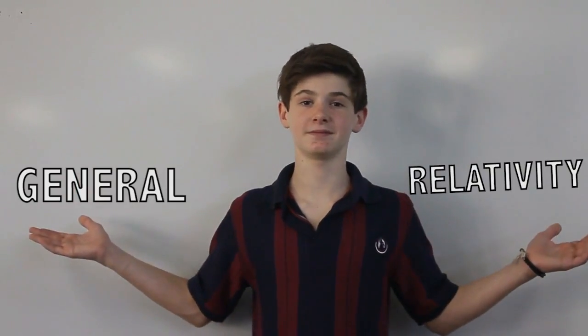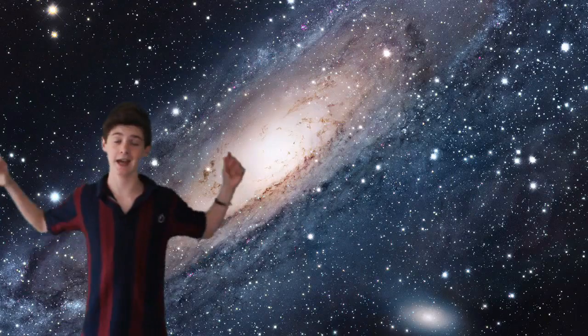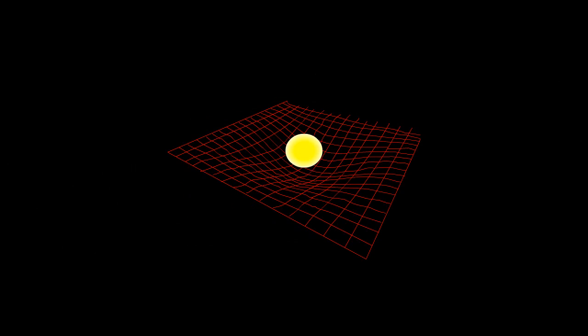This is where it gets really weird. Almost 100 years ago, Einstein published his theory of general relativity — about how gravity affects space and time. Mass bends space, just like this ball. This causes what we call gravity: a planet wants to go straight, but space is curved so it orbits around.